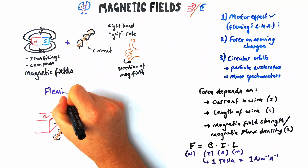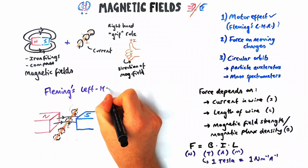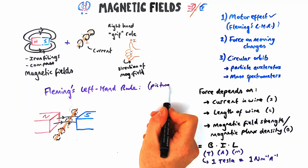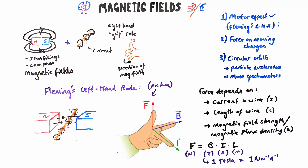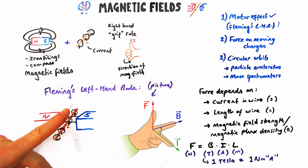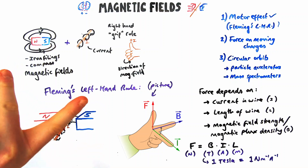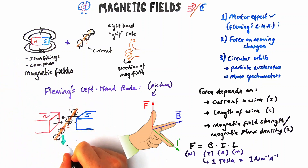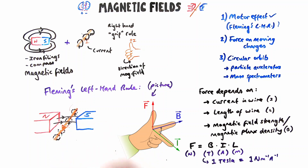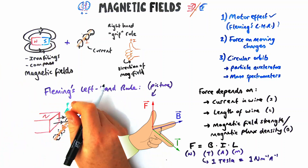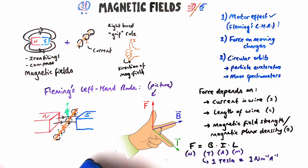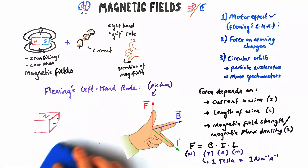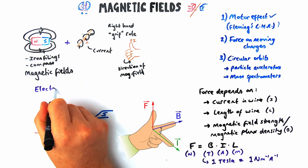To find the direction of the force on the wire we use Fleming's left-hand rule. My first finger lines up with the field from north to south, my second finger lines up with the conventional current from positive to negative, and my thumb points in the direction of the force. In this diagram the field is going left to right and the current is going towards me, so the force on the wire goes upward.